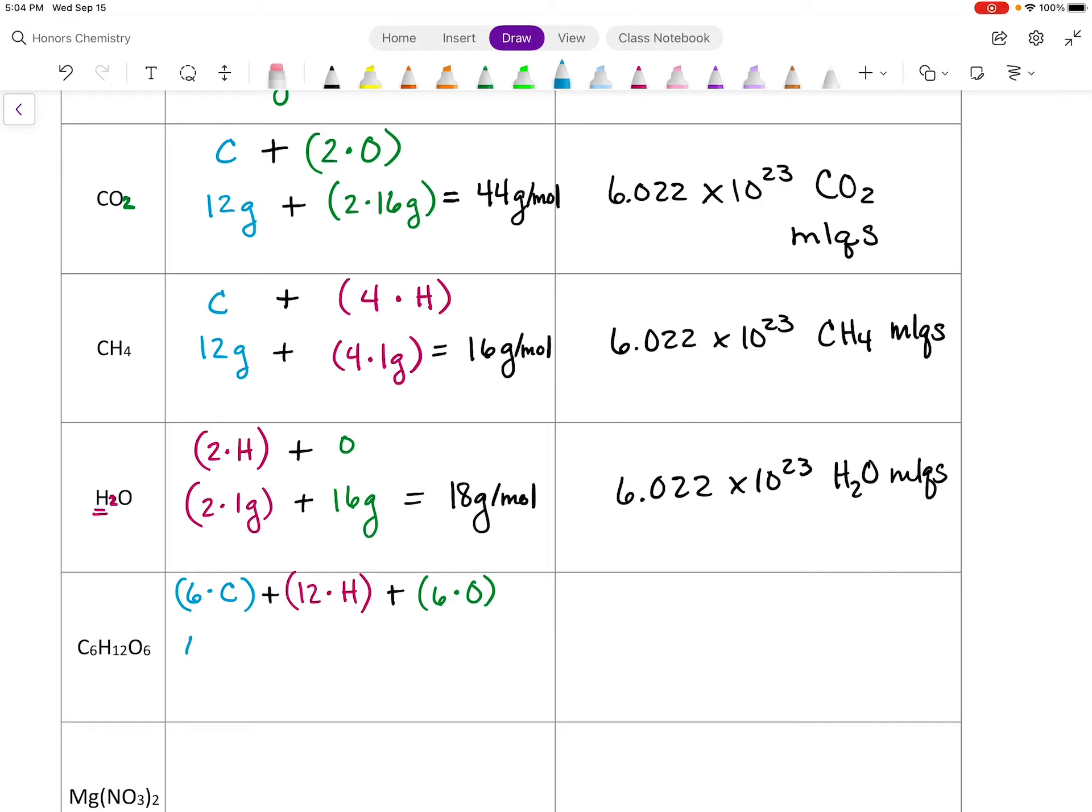All right, so let's plug some numbers in for this. So 6 times 12 grams, plus 12 times 1 gram, plus 6 times 16 grams. So we're going to do the math on all of this and we find out we have 180 grams per mole. Again, we have 6.022 times 10 to the 23rd glucose molecules. So C6H12O6 molecules.